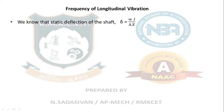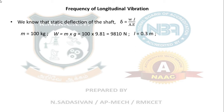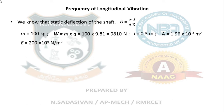In this formula, W is weight, L is length of the shaft, A is cross-section area, and E is Young's modulus. The values are: mass M = 100 kg, so weight W = M × g = 9810 N. L = 0.3 m, area A = 1.96 × 10⁻³ m², and Young's modulus E = 200 × 10⁹ N/m². Now substitute all values into the formula.